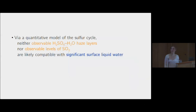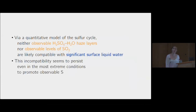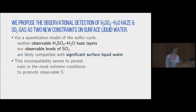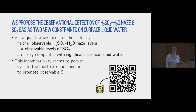To wrap up: via a quantitative model of the sulfur cycle, neither observable sulfate haze layers nor observable levels of SO2 are likely compatible with significant surface liquid water. This incompatibility seems to persist even in the most extreme conditions to promote observable sulfur. Therefore, we propose the observational detection of sulfate haze and SO2 gas as two new constraints on surface liquid water. The paper has been submitted and is up on arXiv. I can take any questions.